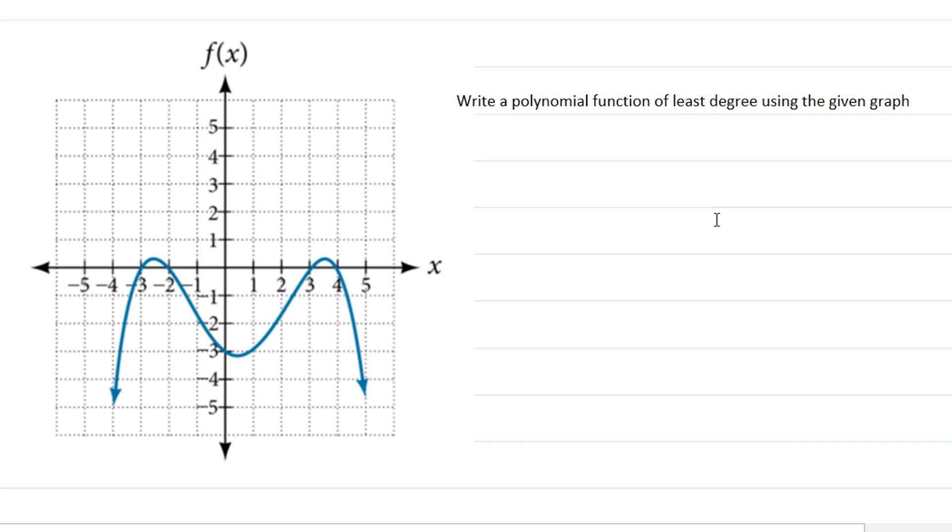We're going to do it the other way around. This time, we're going to look for the polynomial function for this graph. Instead of us looking for the graph of the function, this time, given the graph, let's look at the polynomial function of least degree.